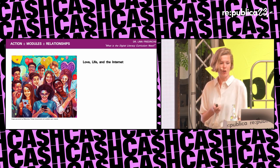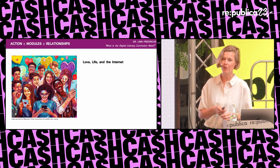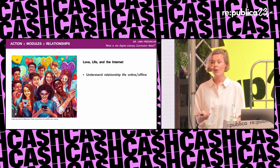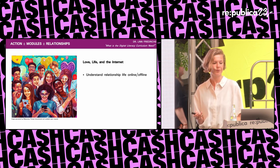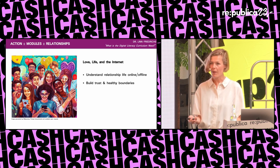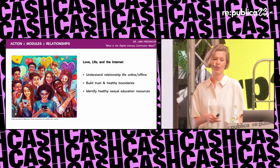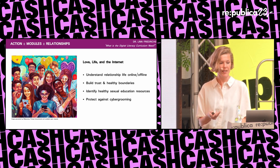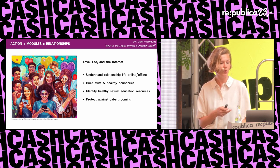Module three: relationships online. Sexual self-discovery and self-determination are human rights and processes we all go through. A digital literacy curriculum needs to address how we fall in love online, how relationship life might differ in online versus offline spaces, how to build trust, how to develop healthy boundaries, how to flirt, what are healthy and unhealthy sexual education resources — we need to discuss porn — and the self-protection element: signs of cyber grooming and steps students can take if someone is being targeted. Social, emotional, and very positive sex education needs to include the online space.